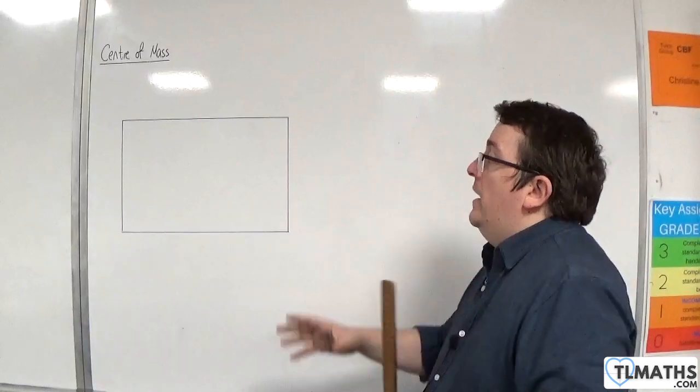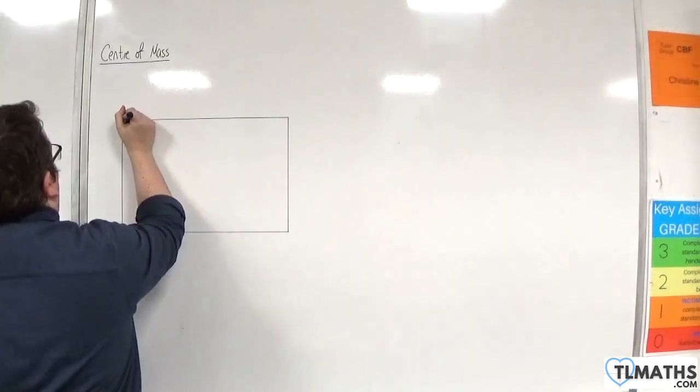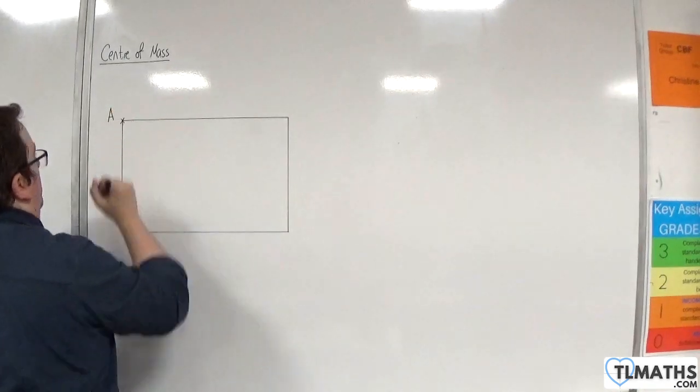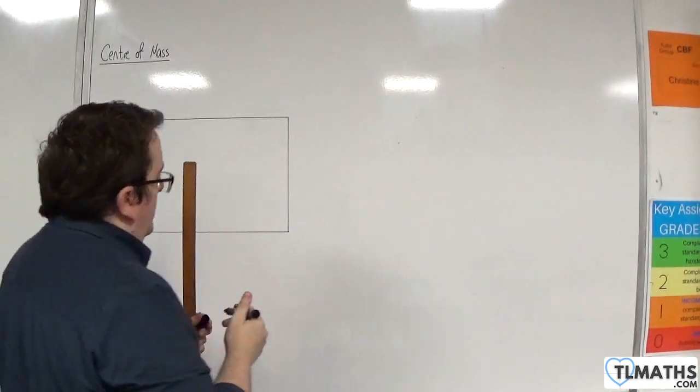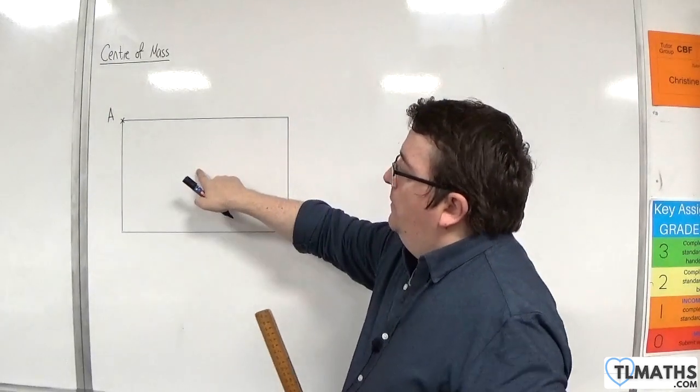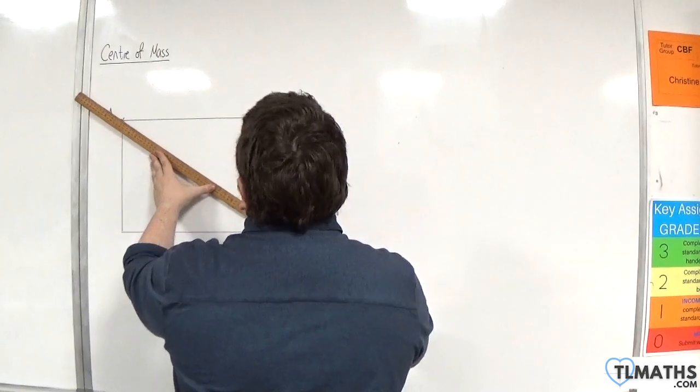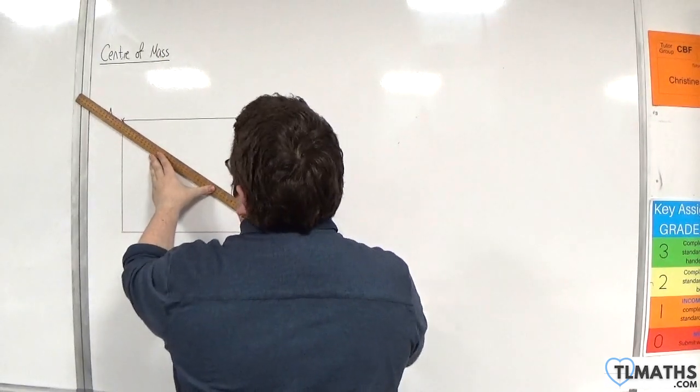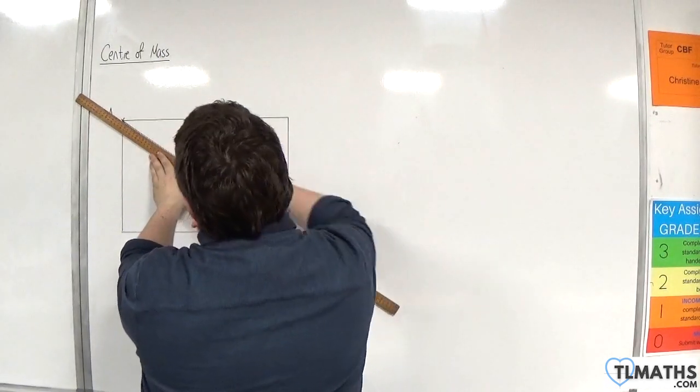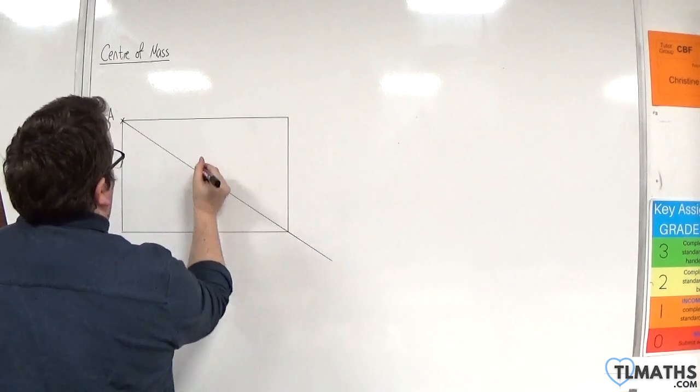So, let's say we have this rectangle, and I suspend it from this point, let's call that point A. The centre of mass of the rectangle is going to be dead centre here. So if I draw a line from A, through, then that line...